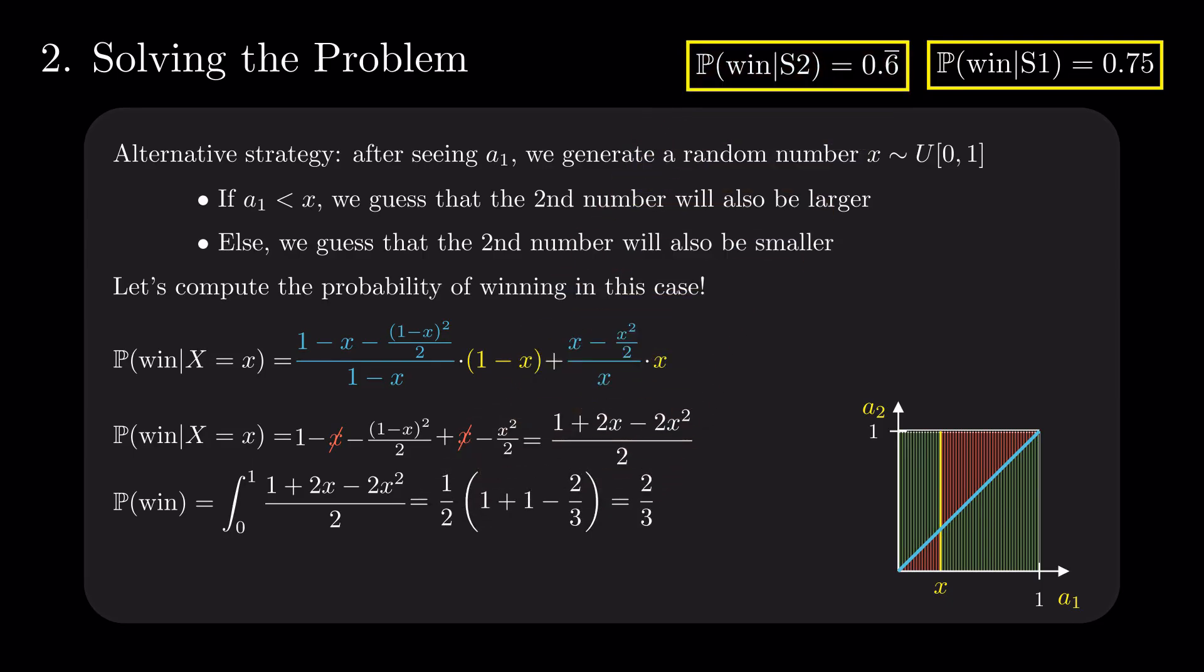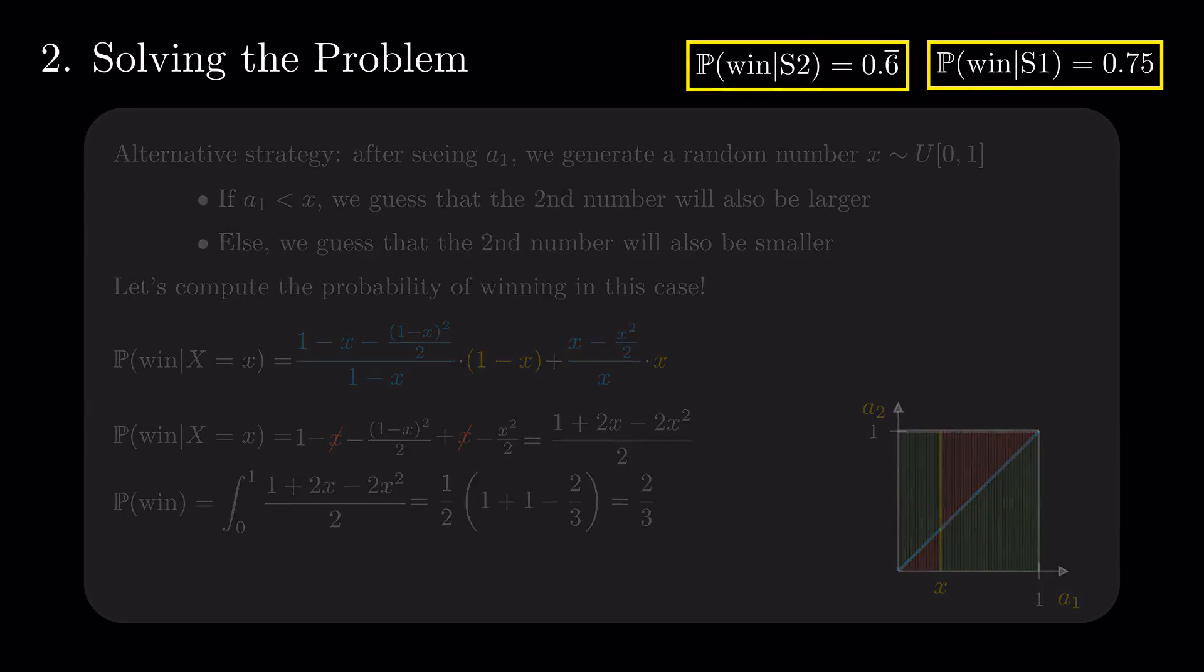We have been tricked. The more complex algorithm, considering the genuine distribution of values, failed to provide a greater chance of winning.